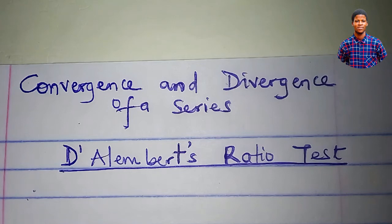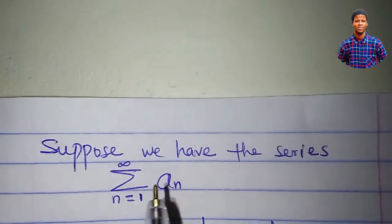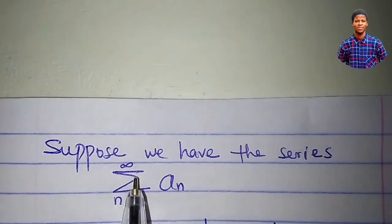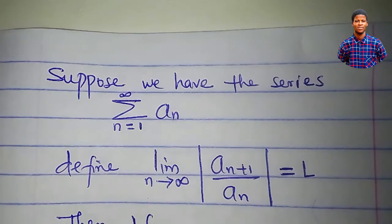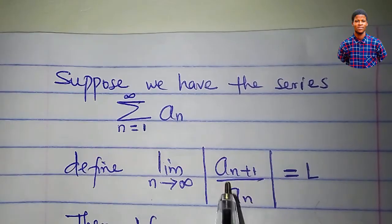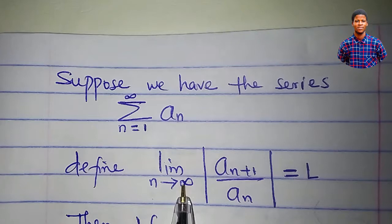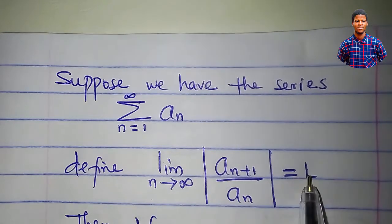In this tutorial, I'll teach you how to determine whether a series converges or diverges, making use of the ratio test. Suppose we have the series summation a sub n from n equal to 1 to infinity. We define the limit of the modulus of a sub n plus 1 all over a sub n as n approaches infinity, and say this limit is equal to L.